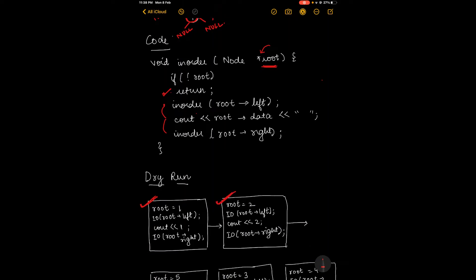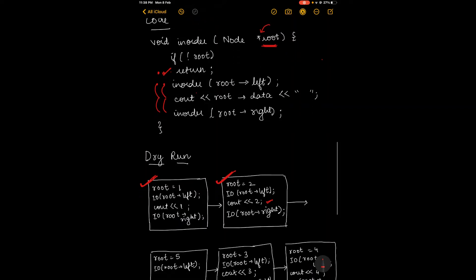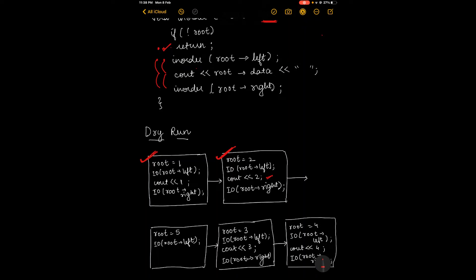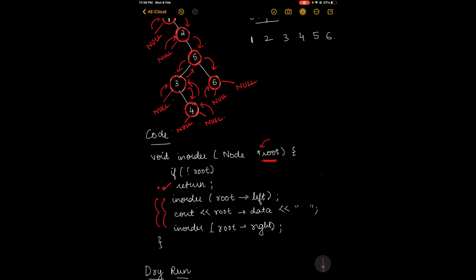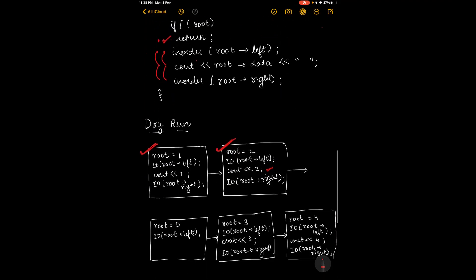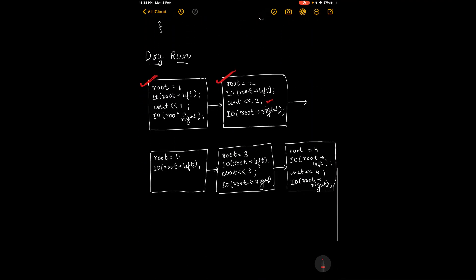Now root equals 2. We move on to its left child, which is null, so we return from this statement to the calling function. We resume and cout root data, so 2 will be printed. Then in-order root right: the right child of 2 will now be passed. The right child of 2 is 5, as you can see in the diagram.